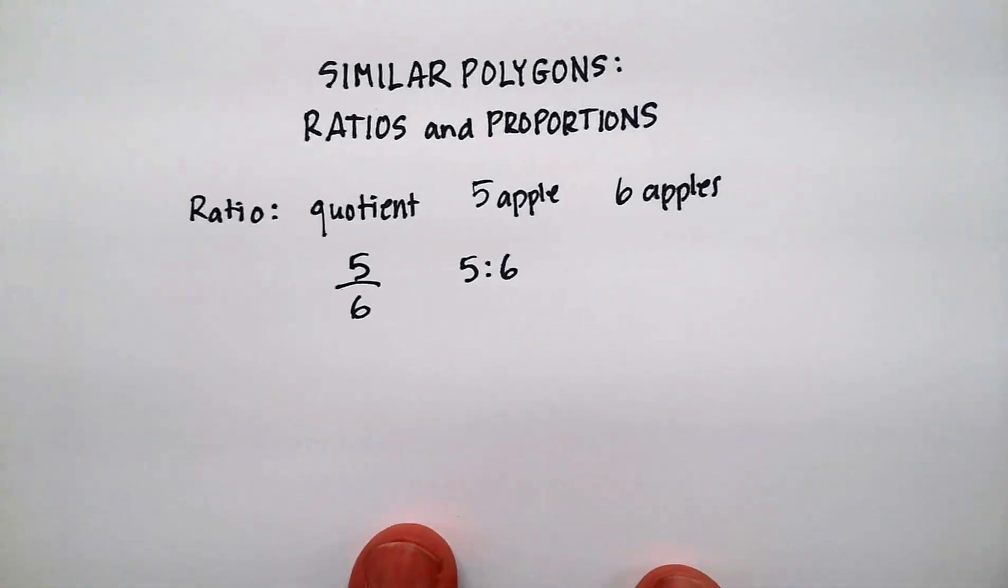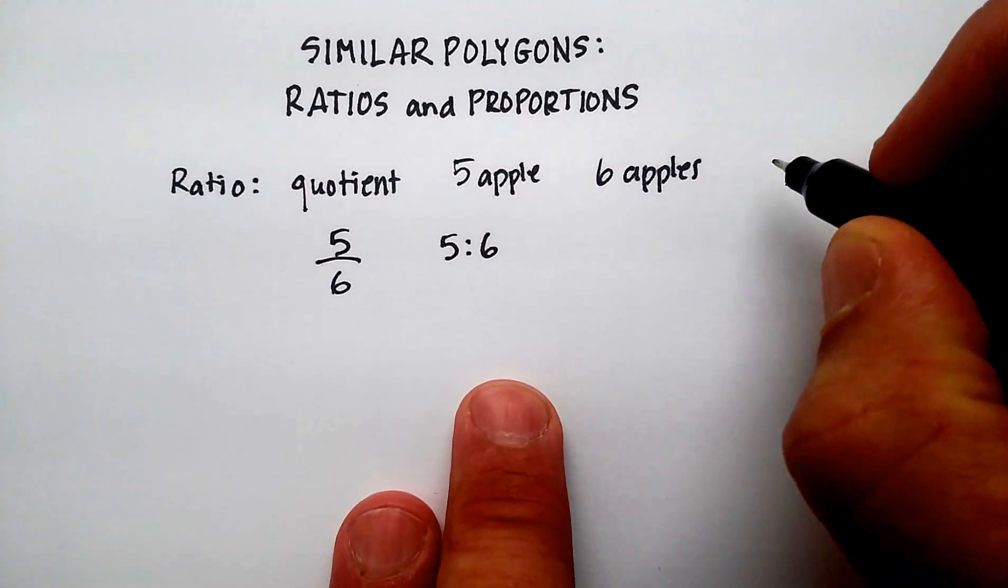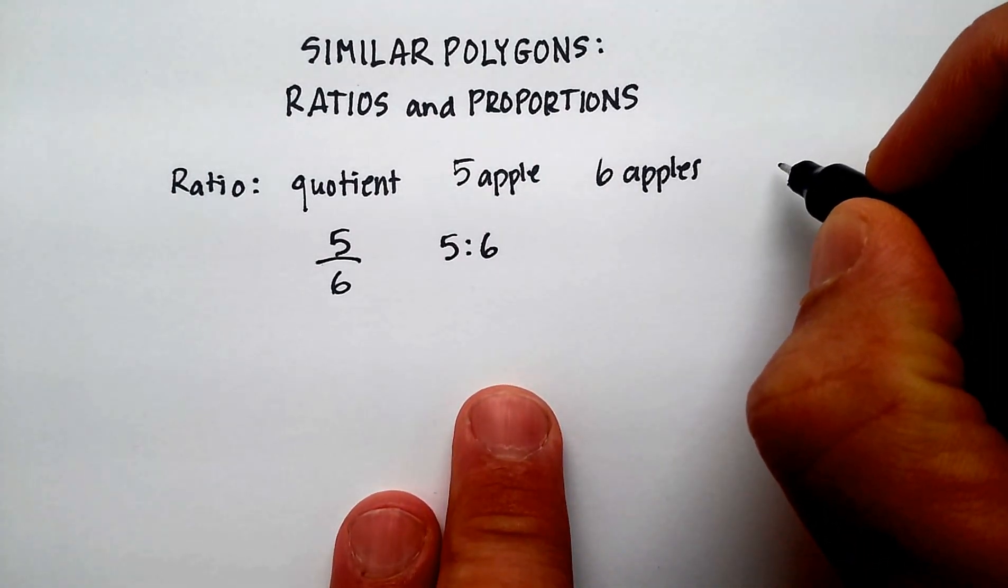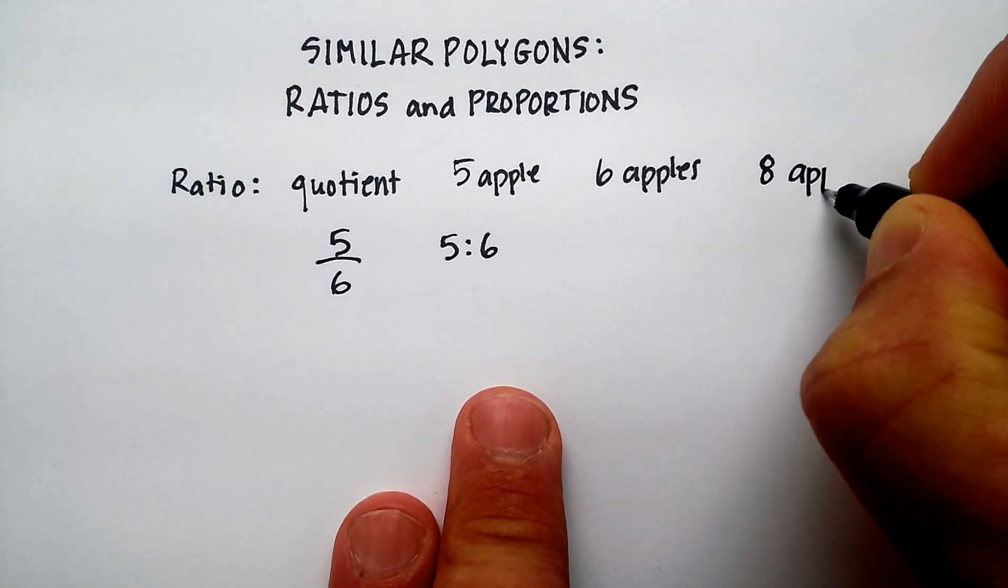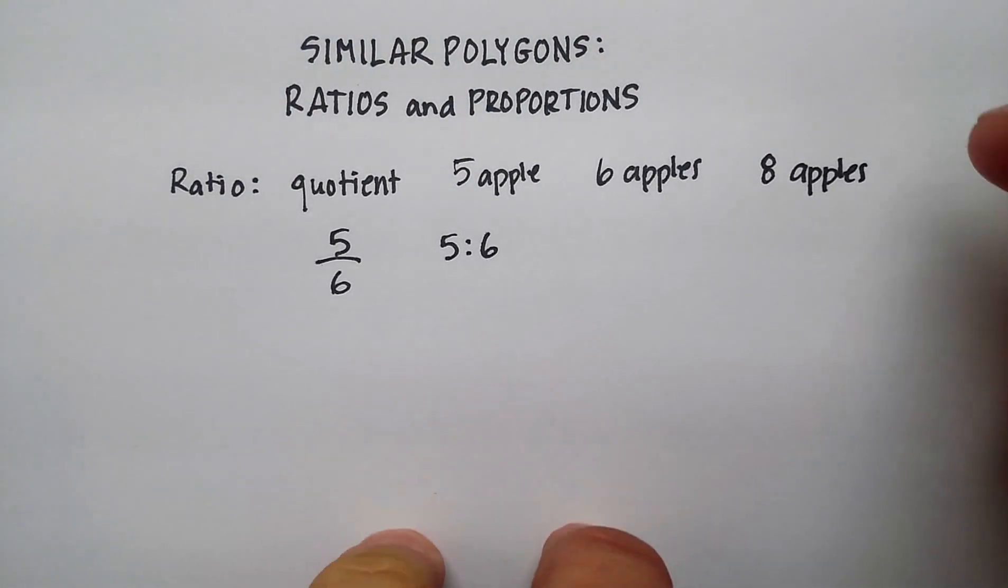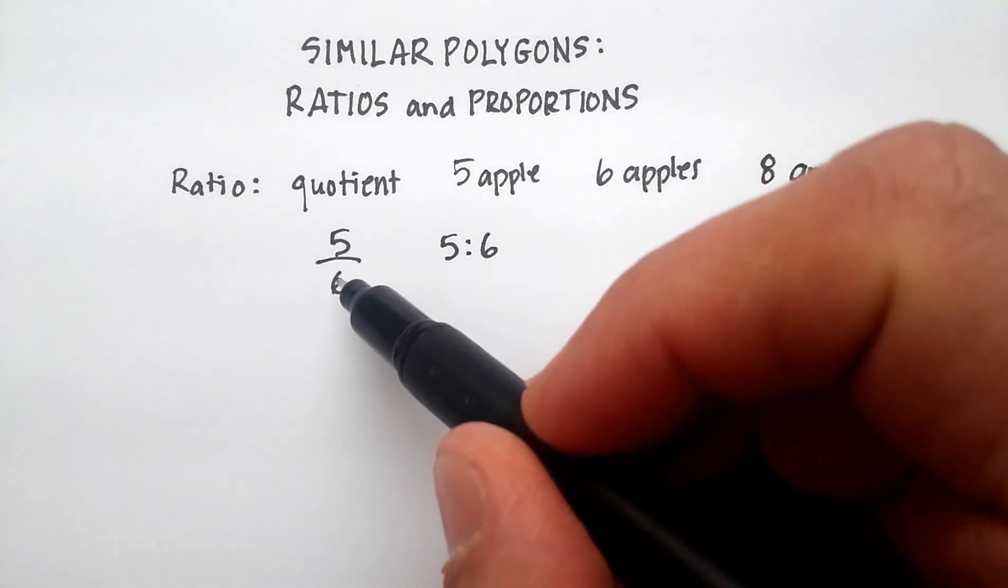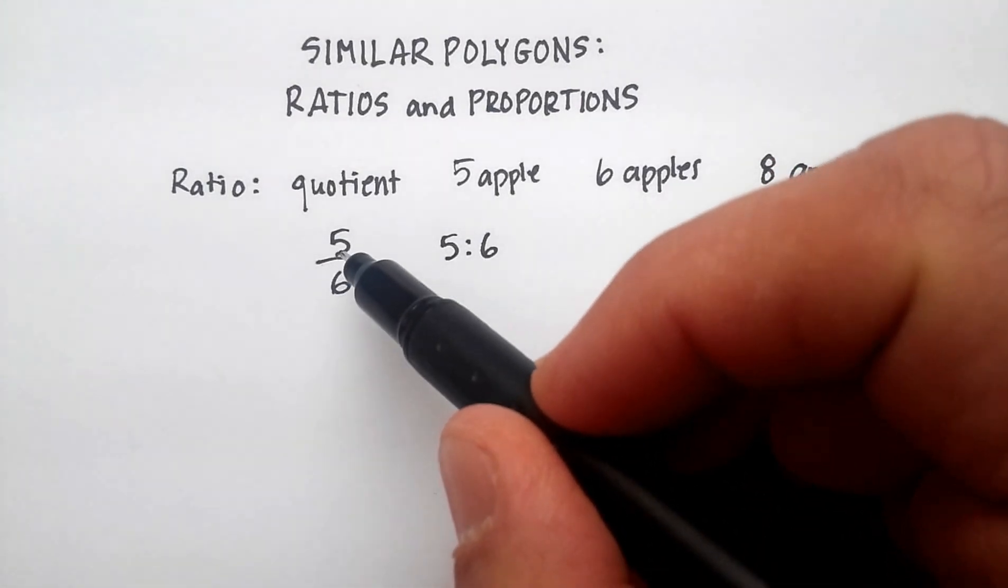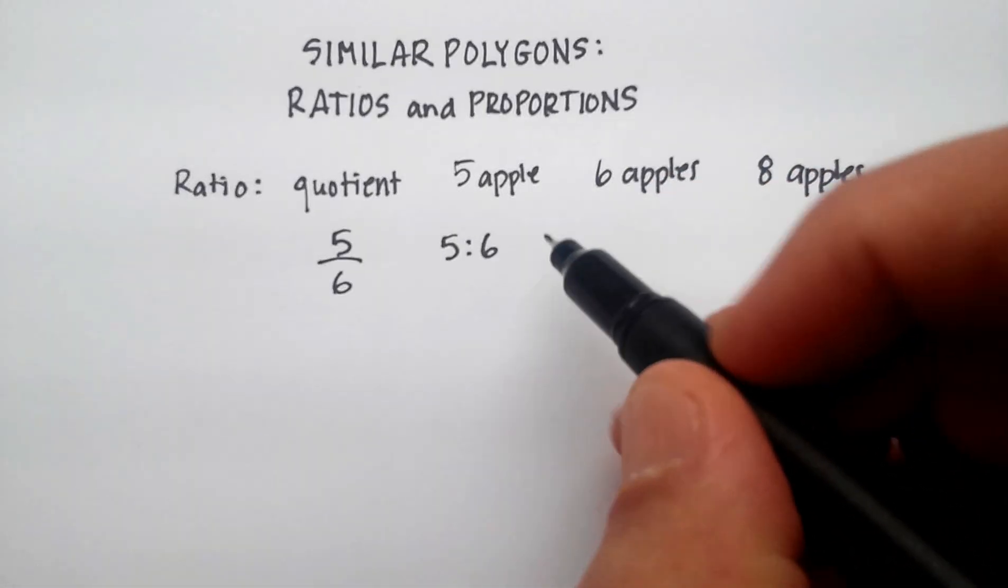Here's an interesting thing as well. Another way of writing this, another nomenclature if you want, is let's say I had a third basket and this basket had like eight apples in it, and you wanted to compare the ratios between these three baskets. Now, it would be awkward to write it as a quotient, wouldn't it?